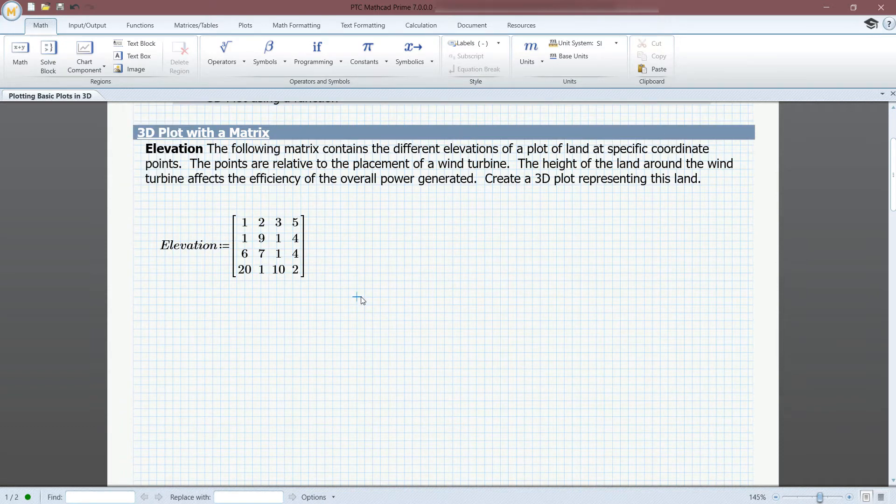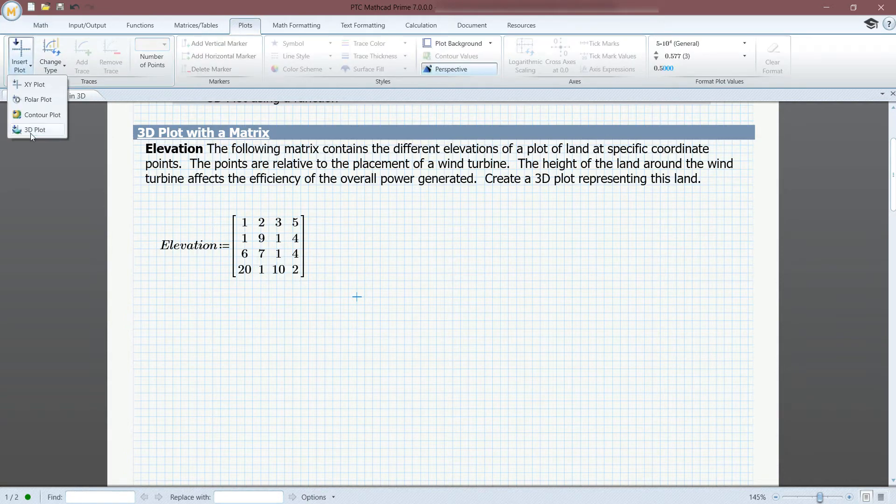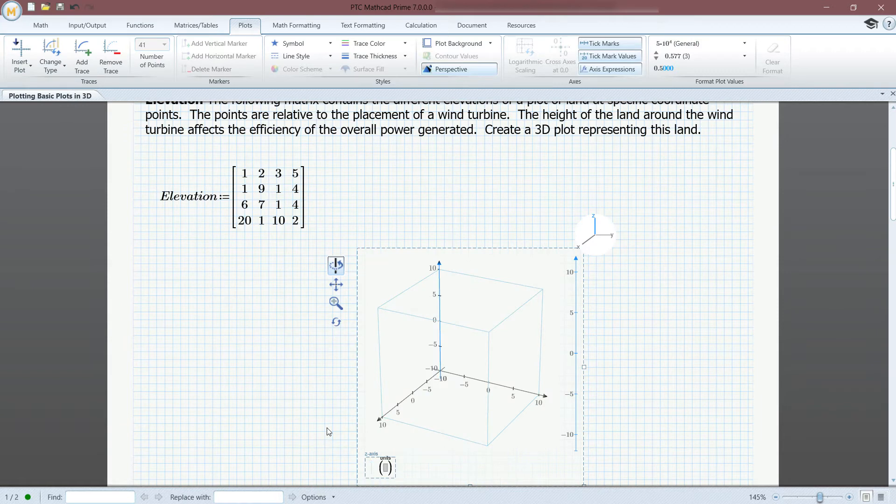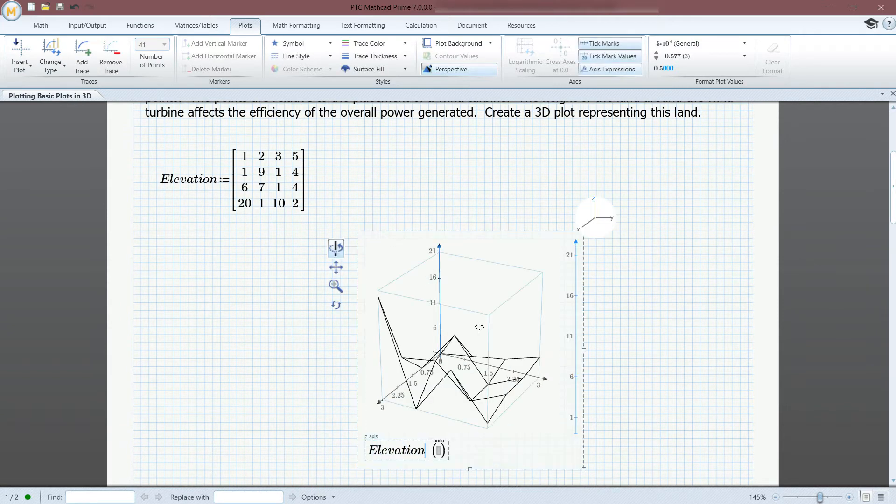Here you can see we have a 4x4 matrix representing the elevation of land. To add a 3D plot, you go to the Plots tab, Insert Plot, 3D Plot. We have defined the matrix as elevation, and if we insert this into the plot, you can see we get the results.